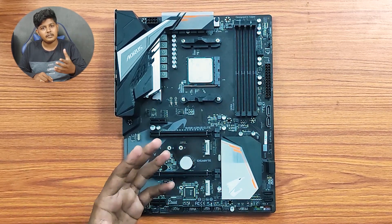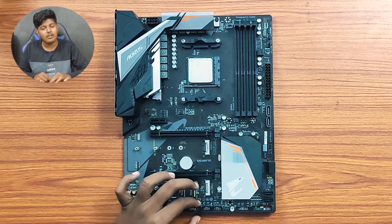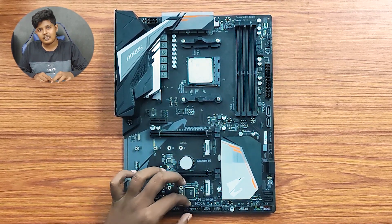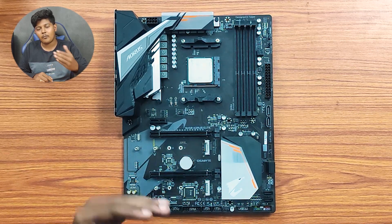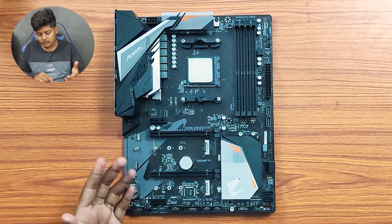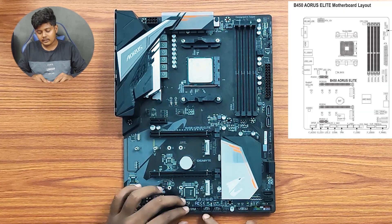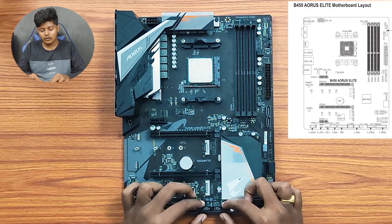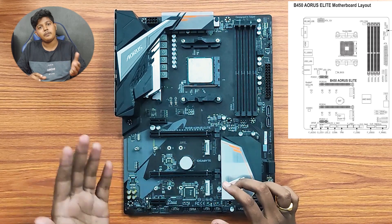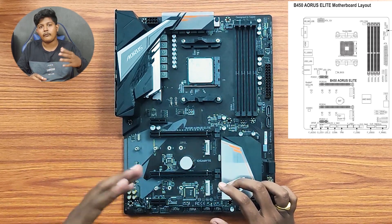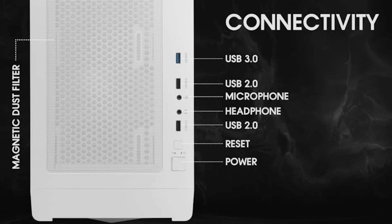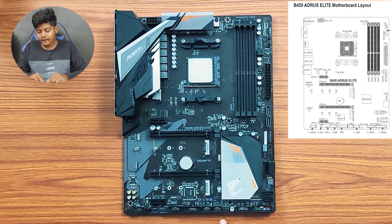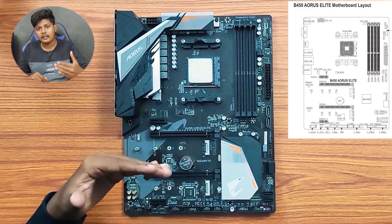The next port is the TPM port — Trusted Platform Module. We can also use this for USB 1.0 and USB 2.0. In this connector, there are USB ports for the front panel — whether Ringigan or Noligan. You can use these ports as well.